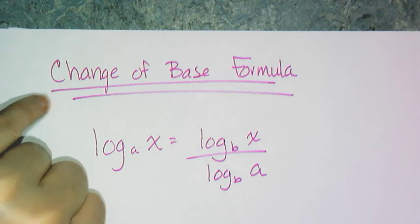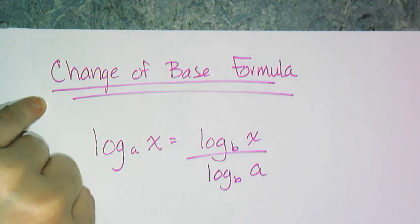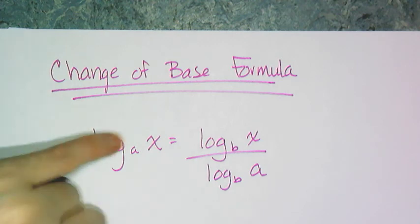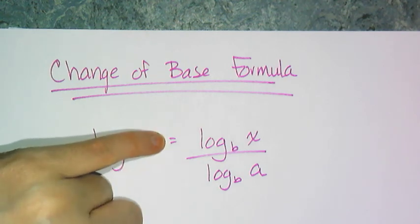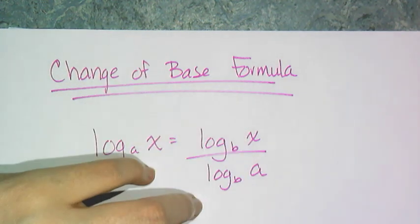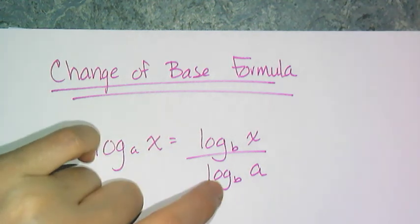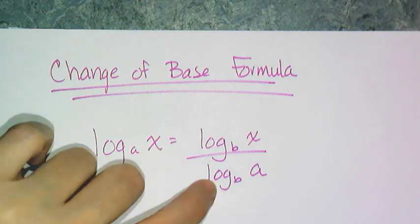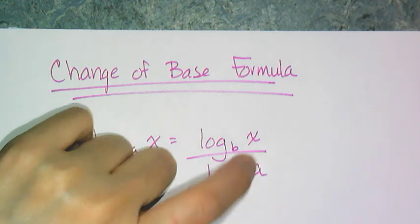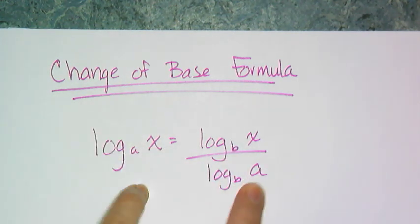In a later class activity, after I teach you some of the more interesting log laws and log properties, I'm going to have you derive this formula. In the meantime, any log base a of x can be converted to whatever log you want. You choose the base you want and then you have two versions of it: log base b of x and log base b of your old base a, and these two are actually equivalent.